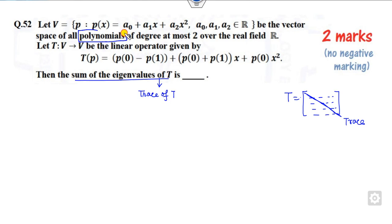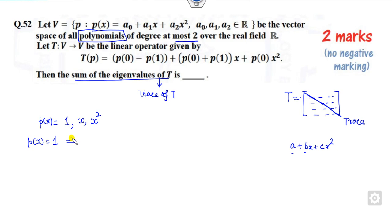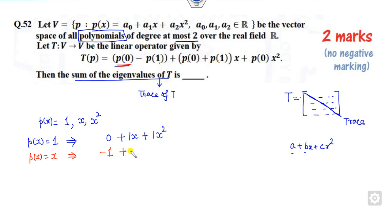Since the polynomial is of degree 2, consider the basis {1, x, x²}. First, when p(x) = 1: p(0) = 1, 1 minus 1 is 0 plus 1 is 1, giving coefficients 1, 0, 0. Second, when p(x) = x: p(0) = 0, p(1) = minus 1 plus p(0) = 0 plus p(1) = 1 gives x, and p(0) = 0 gives 0 for x².